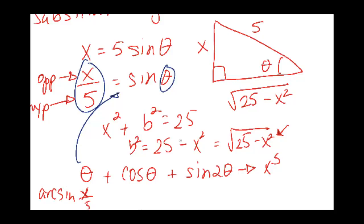This is just a hypothetical problem I'm using to solve this. And then cosine theta, if I come over here to the triangle, cosine, if you remember, is adjacent over hypotenuse. So that's going to give you root of 25 minus x squared over 5 plus sine 2 theta is a little bit more complicated.